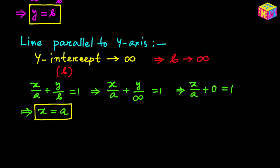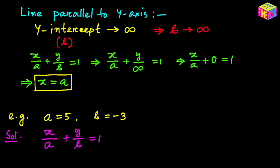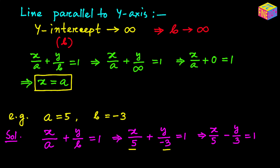Let's take an example. Suppose we are given that the x-intercept equals 5 and the y-intercept equals negative 3, and we need to find the equation of this straight line. Using the intercept form x/a + y/b = 1, we substitute a = 5 and b = −3 to get x/5 + y/(−3) = 1, which simplifies to x/5 minus y/3 equals 1. That is the equation in intercept form.